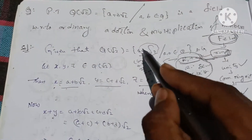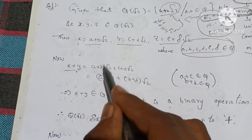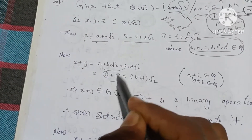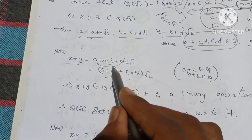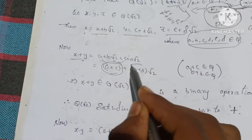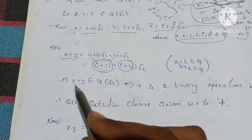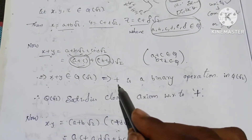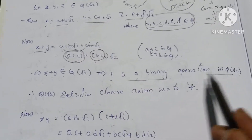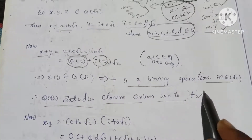First, closure under addition. x plus y equals (a plus b root 2) plus (c plus d root 2), which equals (a plus c) plus (b plus d) root 2. Therefore x plus y belongs to Q(√2), so plus is a binary operation in Q(√2). Q(√2) satisfies the closure law with respect to addition.